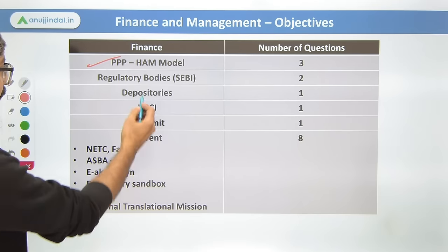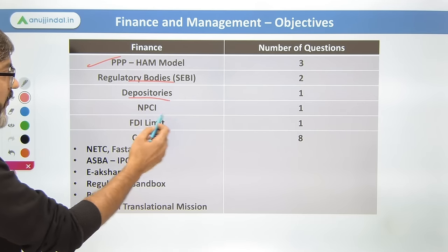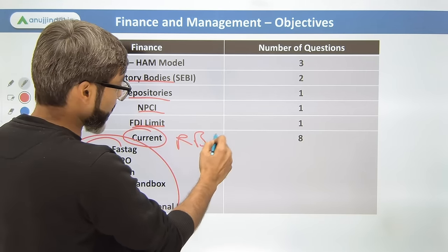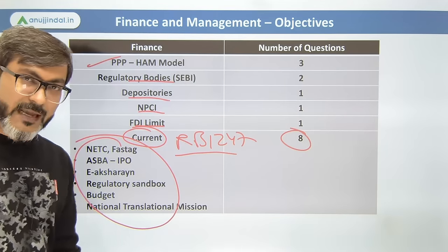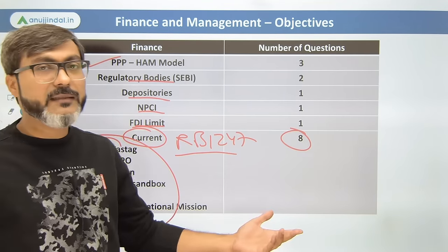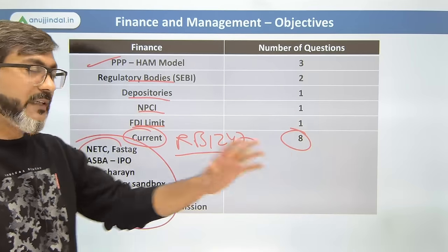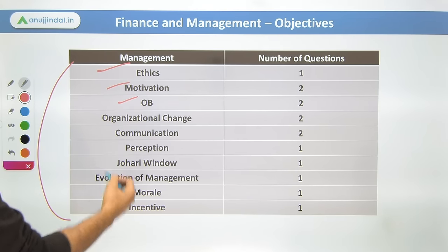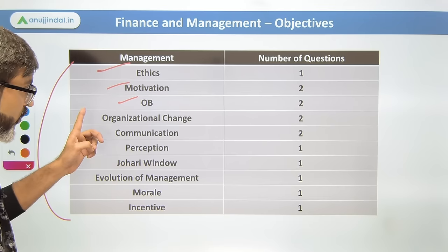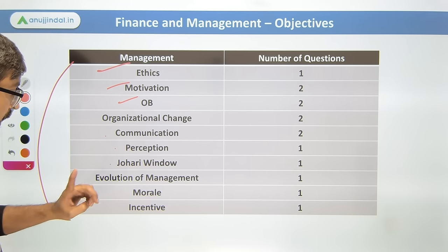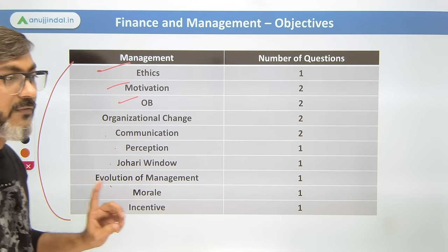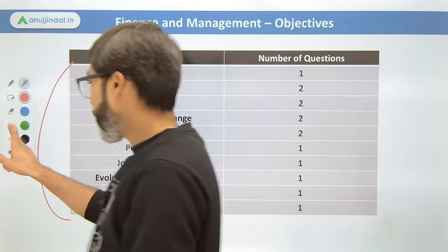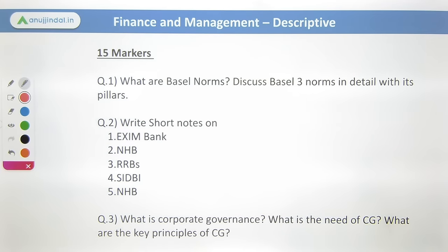In FM objective for 2021, the PPP Harrod-Domar model had three questions. Regulatory body SEBI got one question, depositories one, NPCI one, FDI limit one, and from current affairs through RBI 247 sessions there were eight questions. In management and ethics: motivation had two questions, organizational behavior two questions, organizational change two questions, and communication, perception, Johari window, evolution of management, morale and incentives were also covered.